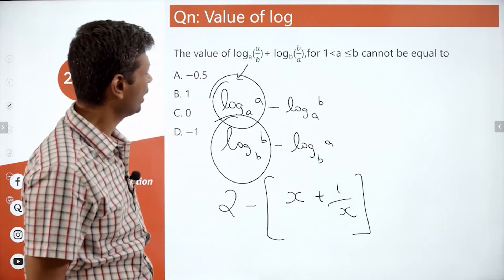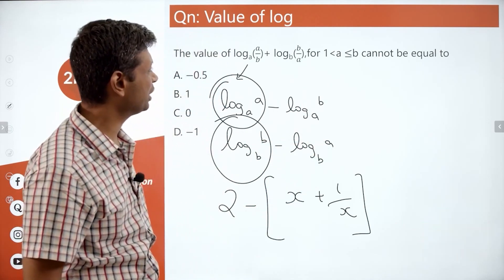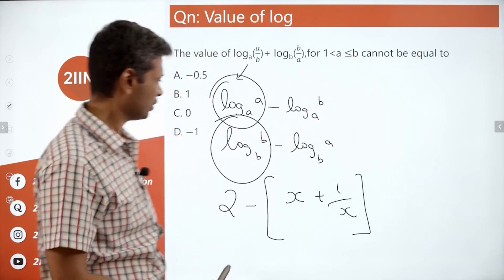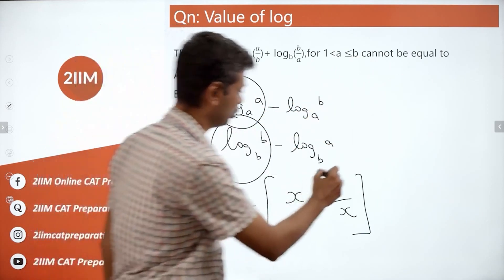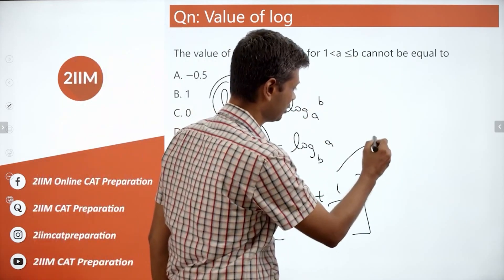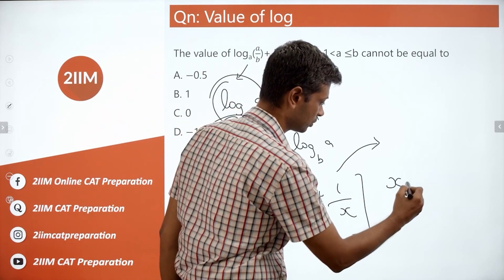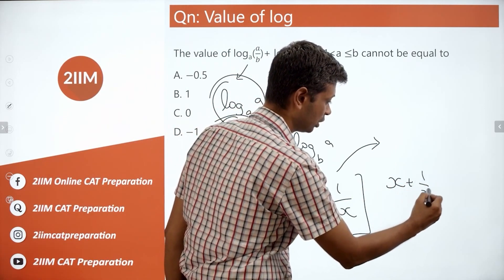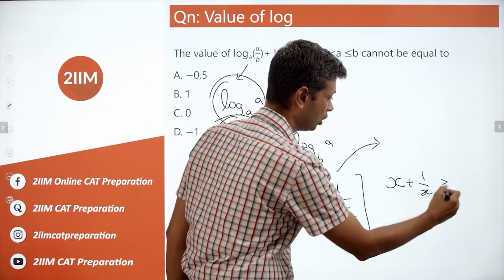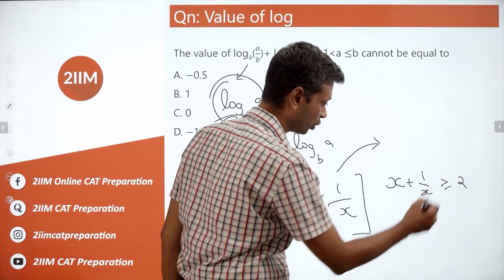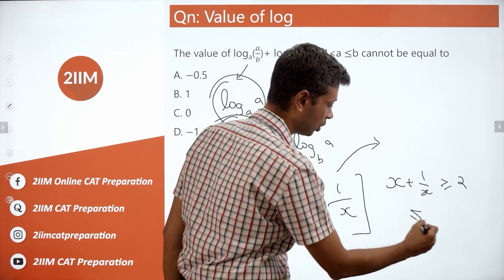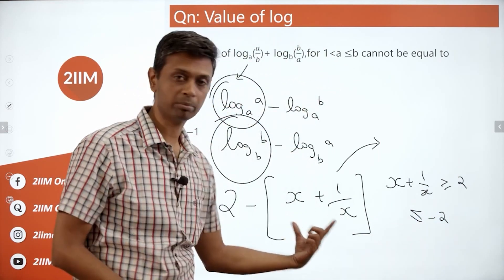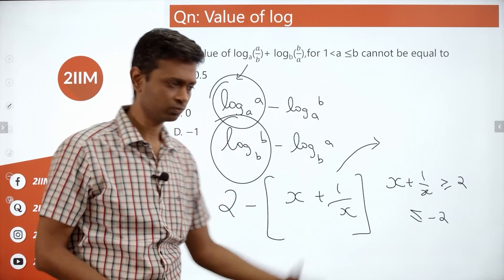So, what we're saying is it cannot be equal to certain values. This is a beautiful function x plus 1 by x. The simple idea is it is either always greater than or equal to 2, or it is less than or equal to minus 2. It cannot lie between minus 2 and plus 2.